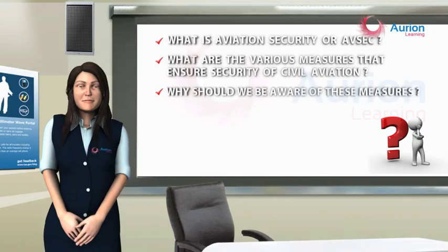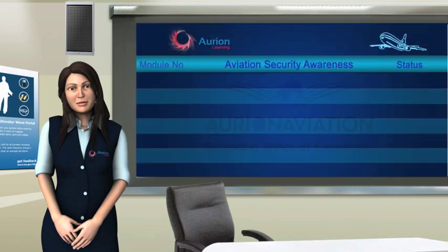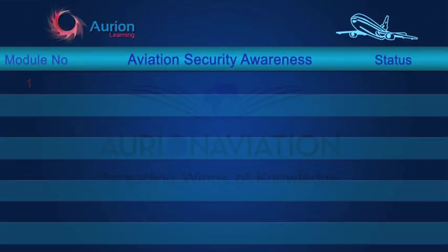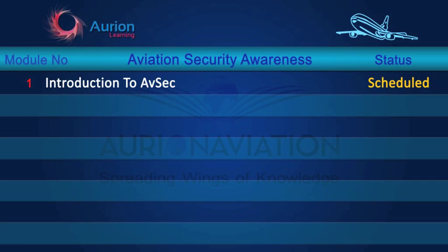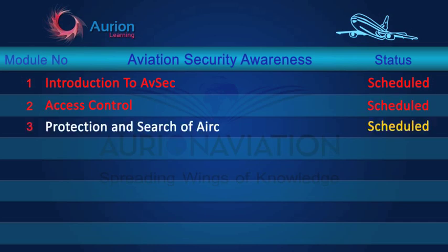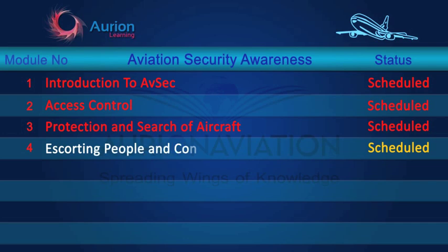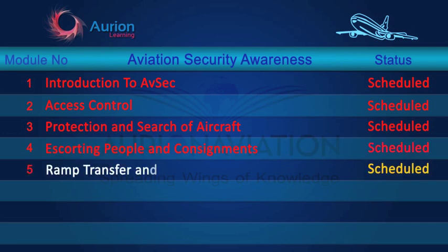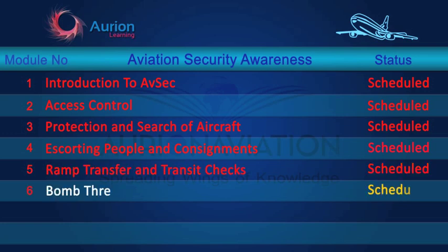The following modules shall answer these questions. Module 1: Introduction to AVSEC Aviation Security. Module 2: Access Control. Module 3: Protection and Search of Aircraft. Module 4: Escorting People and Consignments. Module 5: Ramp Transfer and Transit Checks.